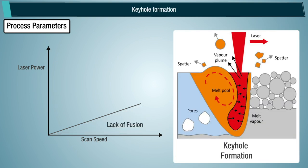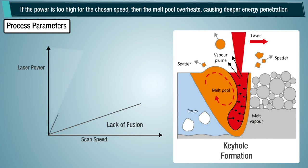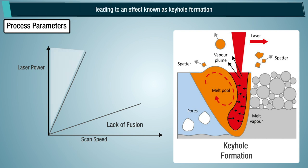Keyhole formation. If the power is too high for the chosen speed, then the melt pool overheats, causing deeper energy penetration, leading to an effect known as keyhole formation.